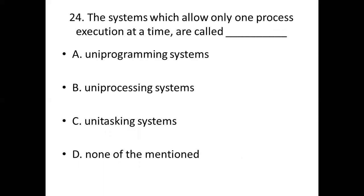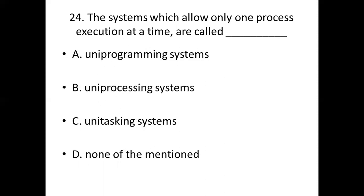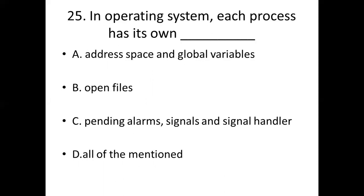Twenty-fourth bit: The system which allows only one process execution at a time are called dash. Option A: Uni-programming systems. Option B: Uni-processing systems. Option C: Uni-tasking systems. Option D: None of the mentioned. Answer: Option B, Uni-processing systems.